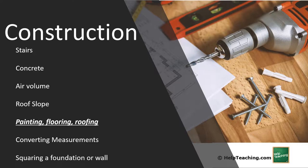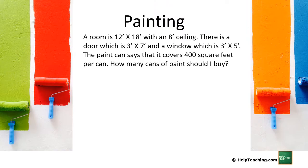Let's begin with an illustration of painting. A room is 12 feet by 18 feet with an eight-foot ceiling. There's a door which is three feet by seven feet and a window which is three feet by five feet. The paint can says it can cover 400 square feet per can. How many cans of paint should I buy?